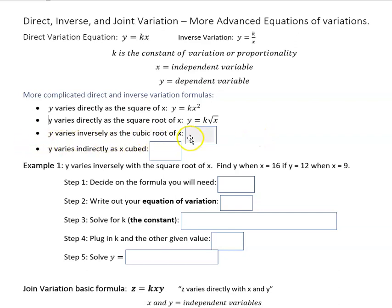y varies inversely as the cubic root of x looks like k over cubic root of x, because inverse means we have k over x. And sometimes instead of inversely you'll see indirectly. So either one of those, we're talking about the one thing going up causes the other thing to go down, or vice versa. And so here we're talking about y varies indirectly as x cubed, so we have k over x cubed.